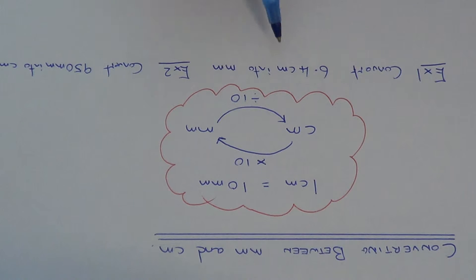Let's have a look at a couple of examples. In our first one we need to convert 6.4 centimeters into millimeters. Since we are converting centimeters into millimeters we need to times the 6.4 by 10. So 6.4 times 10 is 64 millimeters.